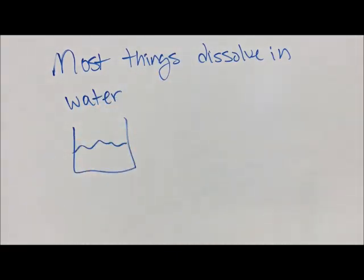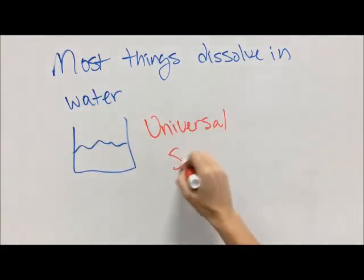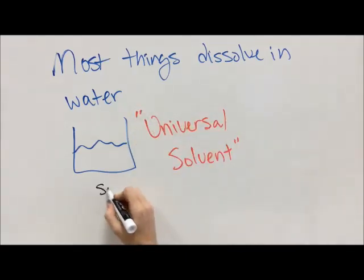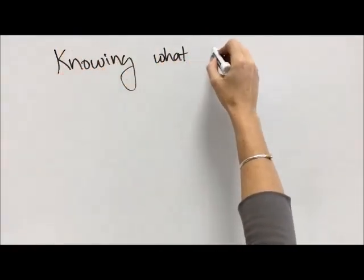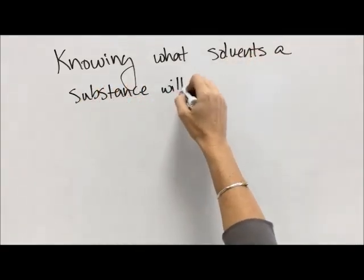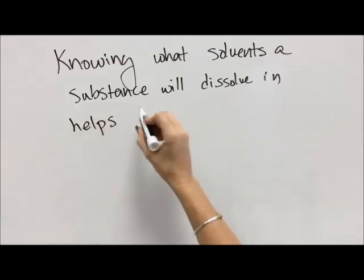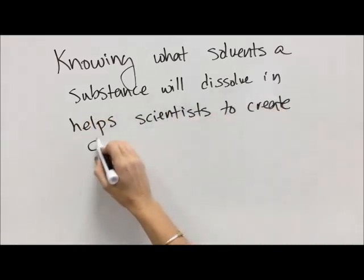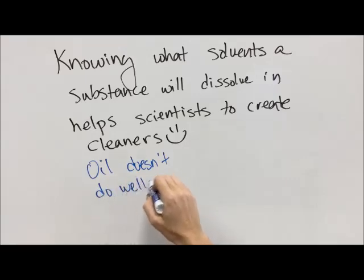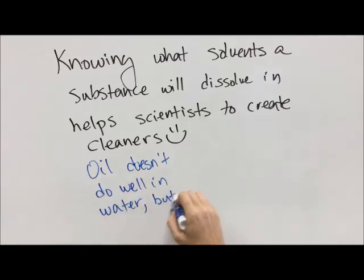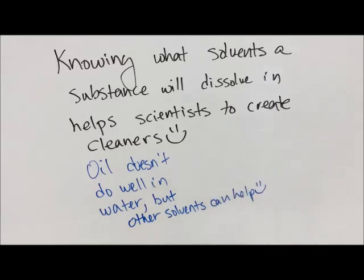Most things dissolve in water — we call water the universal solvent. However, some things do not. Because water is a polar molecule with hydrogens and oxygens, it dissolves polar molecules, and non-polar things won't dissolve very well in it. Understanding what type of substance something is and whether or not it will dissolve helps us understand what kind of solvents we need to use. What solvents a substance dissolves in helps scientists to create cleaners — cleaners help to loosen messes and break them apart so we can clean them up. For example, oil doesn't clean up well in water — if you try to wash greasy hands in cold water, it doesn't work. But heating it up or using a different substance like soap will help you dissolve those messes.